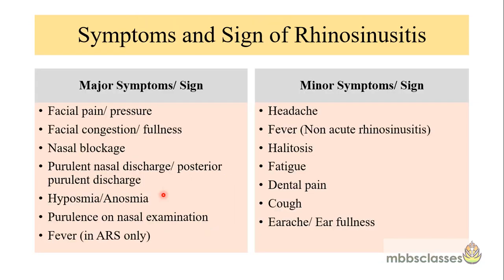The classification of rhinosinusitis based on symptoms includes major and minor symptoms. Major symptoms are facial pain or facial pressure, sensation of facial congestion or fullness, nasal blockage, purulent nasal discharge or post-nasal drip, hyposmia, anosmia — disorders of olfaction — purulence identified on nasal examination, and fever, which is a major symptom only in acute rhinosinusitis. Minor symptoms include headache, fever in non-acute rhinosinusitis, halitosis, fatigue, dental pain, cough, and associated ear symptoms like earache and ear fullness.